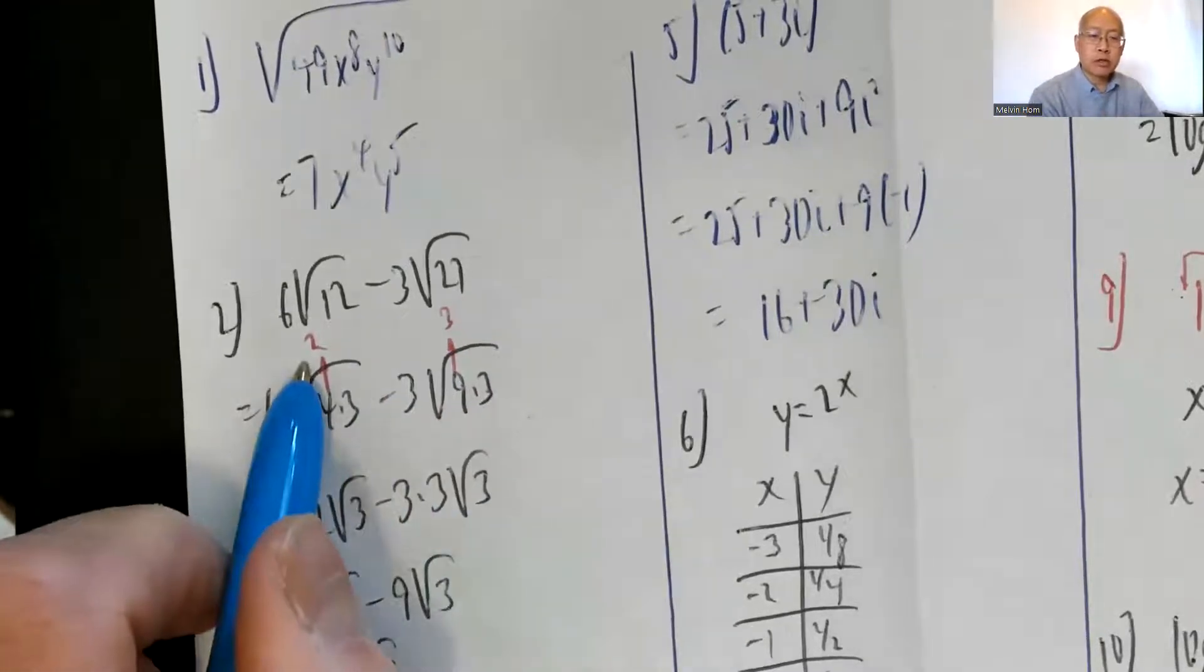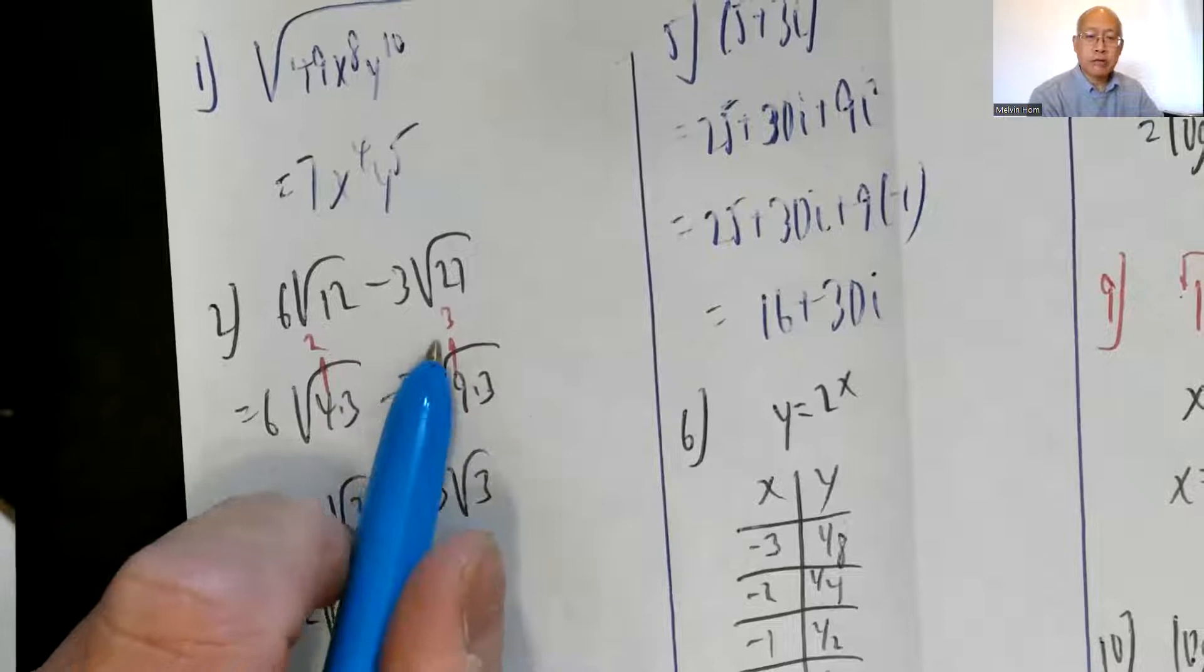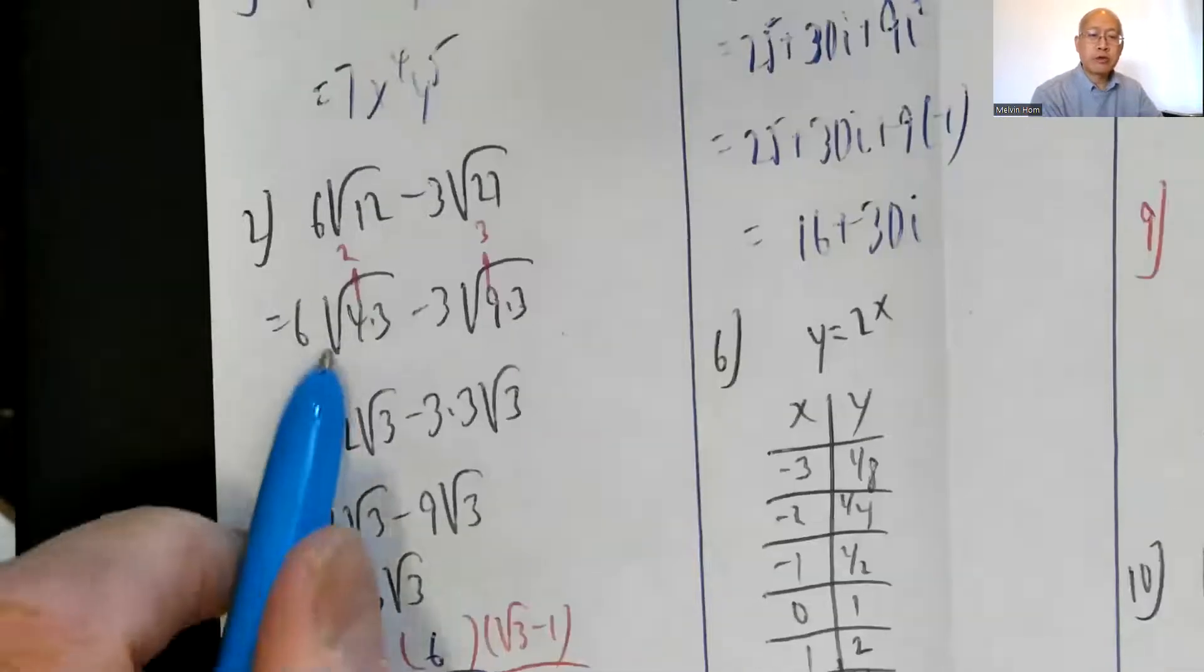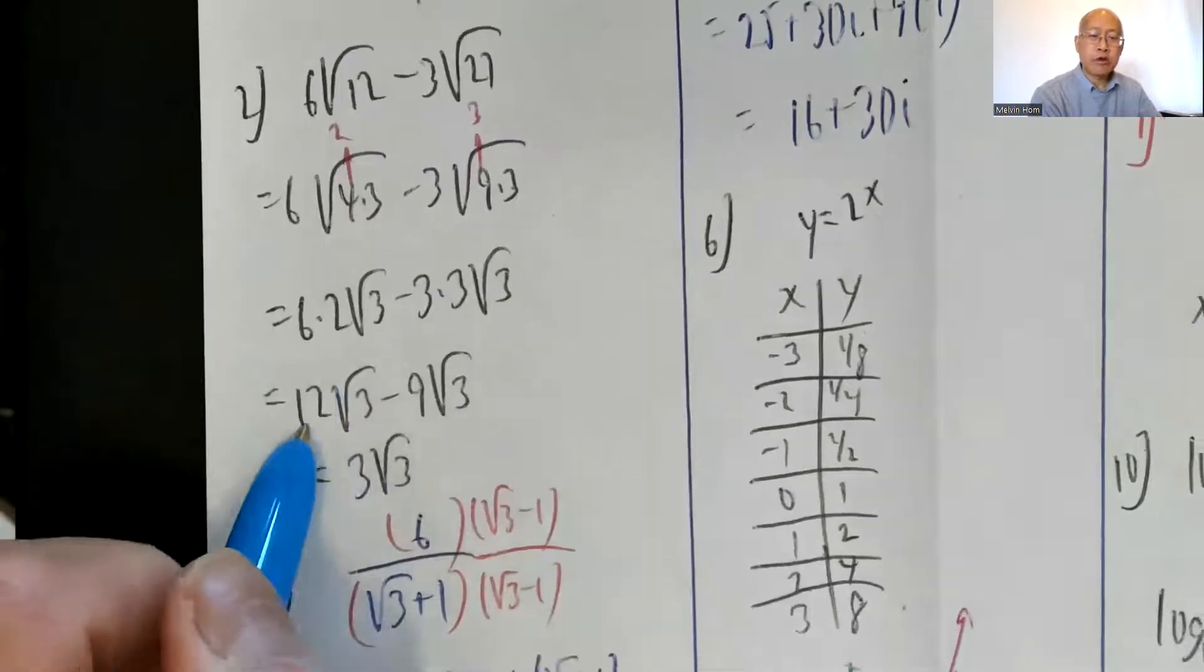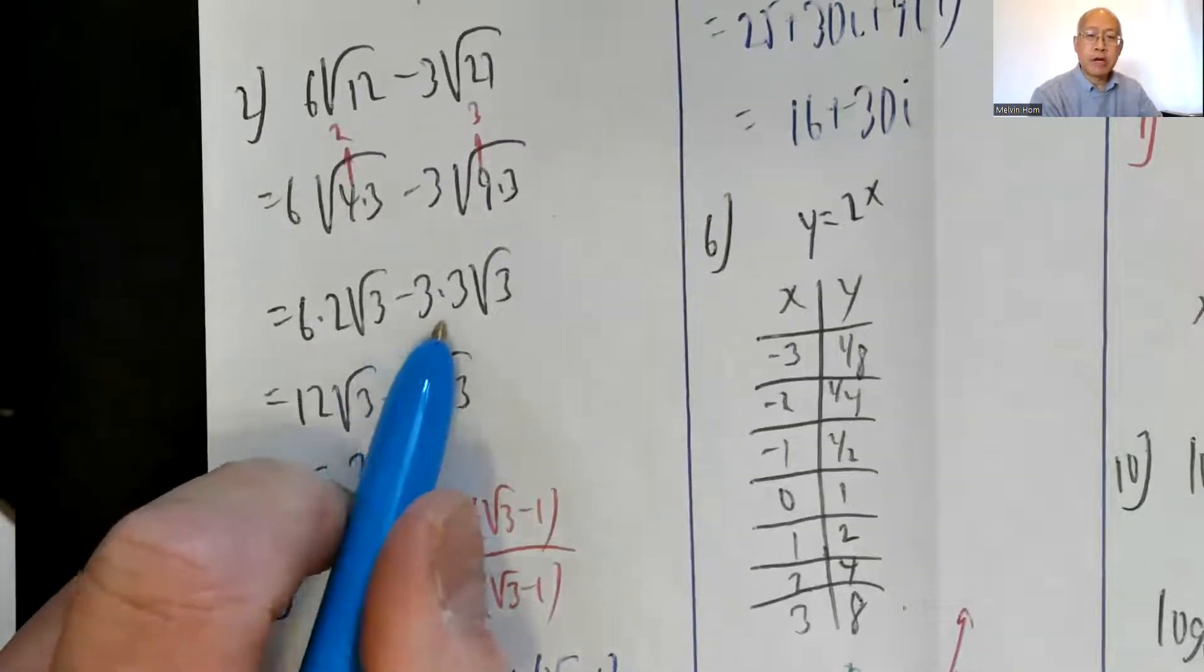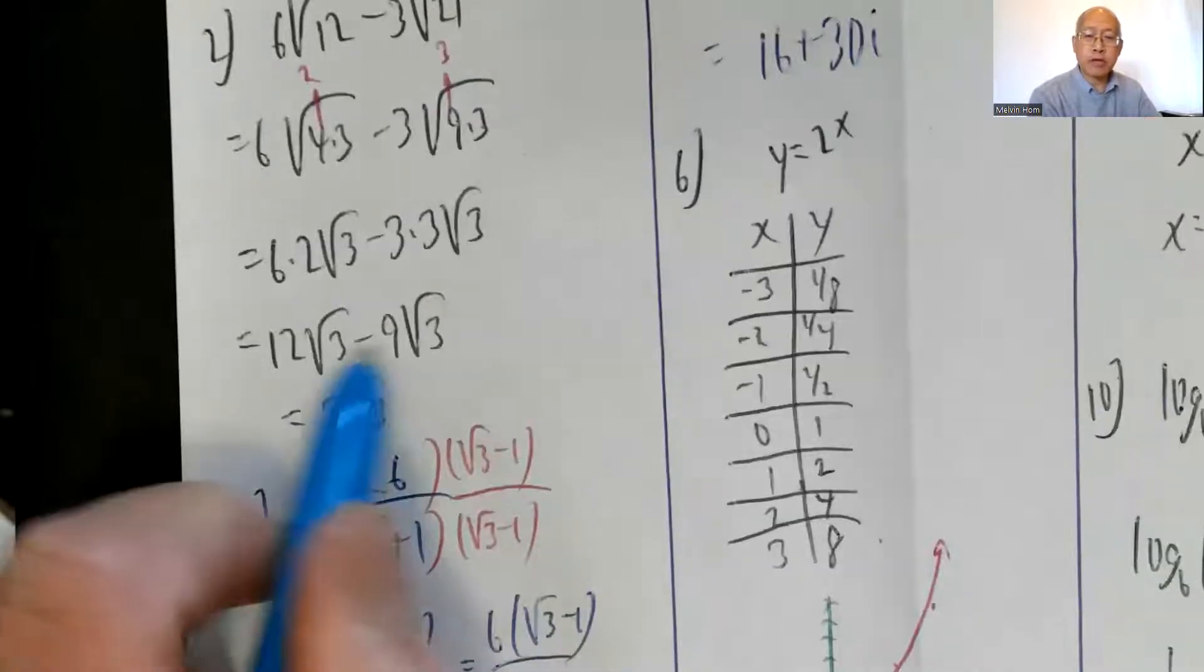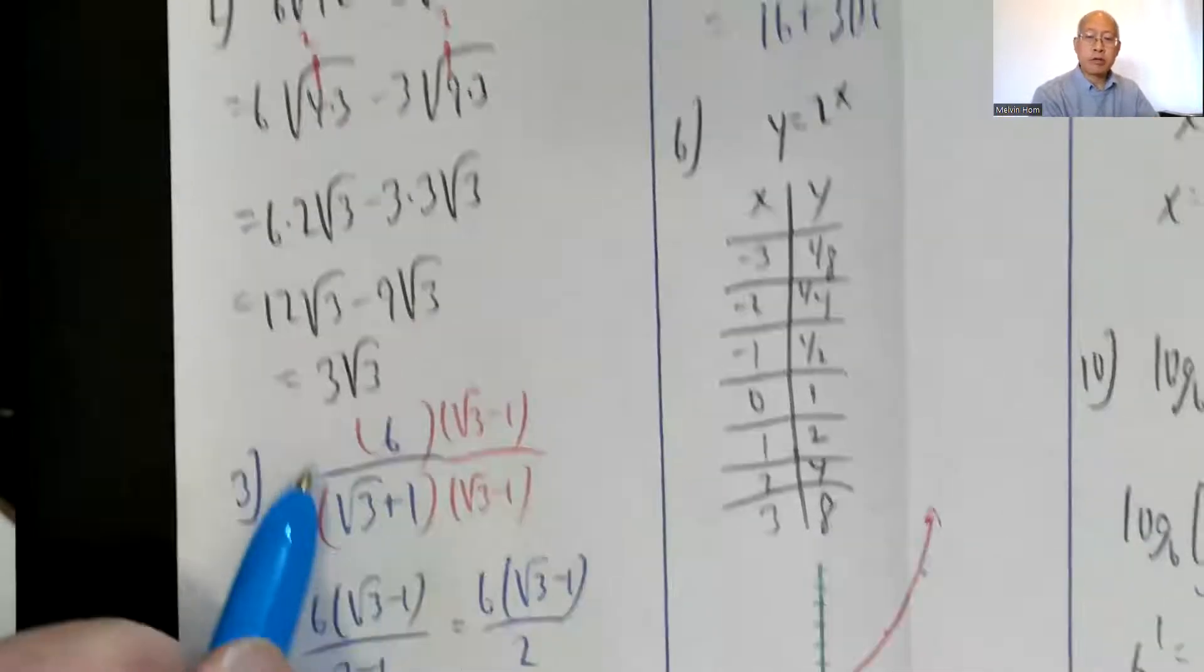Square root of 4 comes outside and becomes a 2. Square root of 9 comes outside and becomes a 3. So I have 6 times 2 radical 3 minus 3 times 3 radical 3. 6 times 2 is 12, 12 radical 3, minus 3 times 3 is 9, 9 radical 3. These are like radicals, so I can combine them into 3 radical 3.